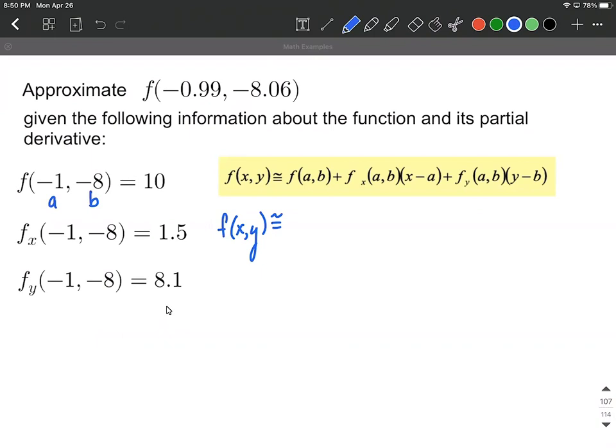We can say that f of negative one, negative eight equals 10, plus the partial derivative with respect to x at negative one, negative eight, which is 1.5, times x minus our a value. Our a value is negative one, so x minus negative one is x plus one.